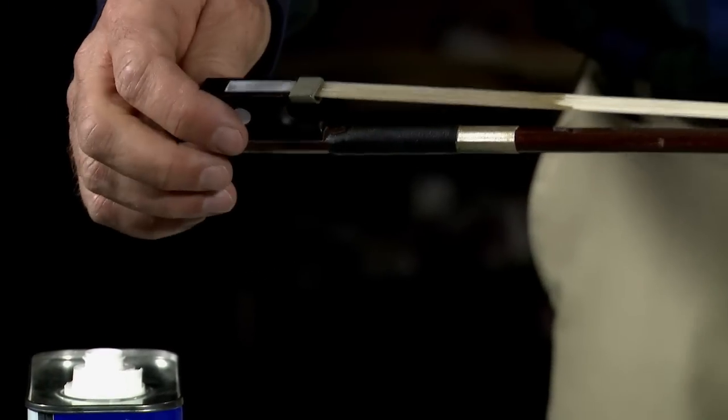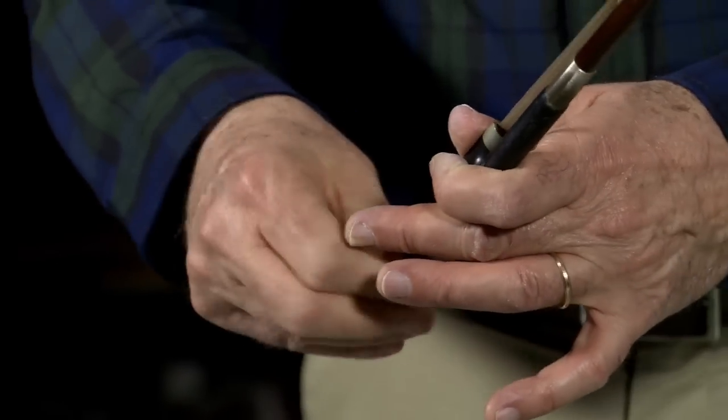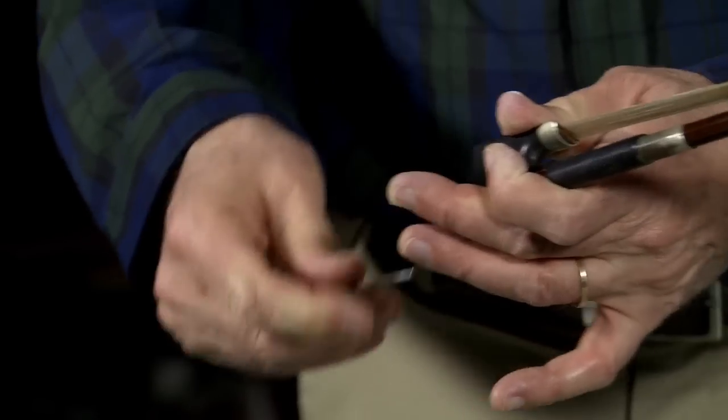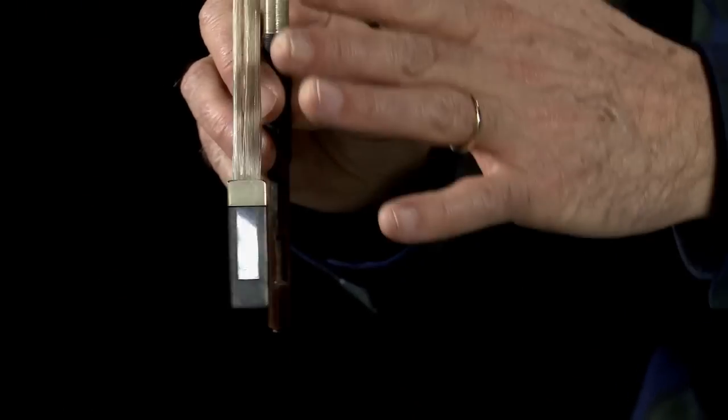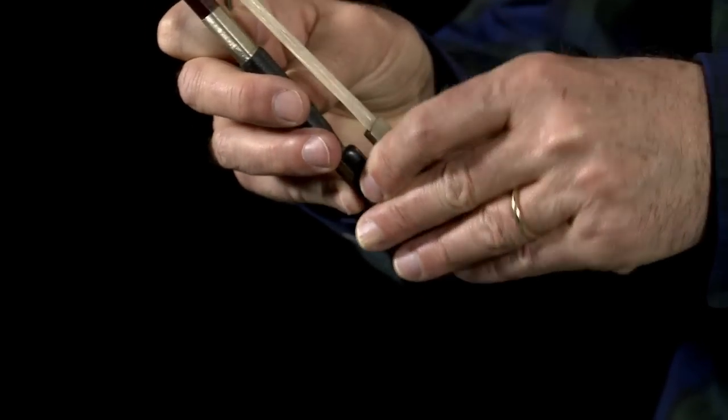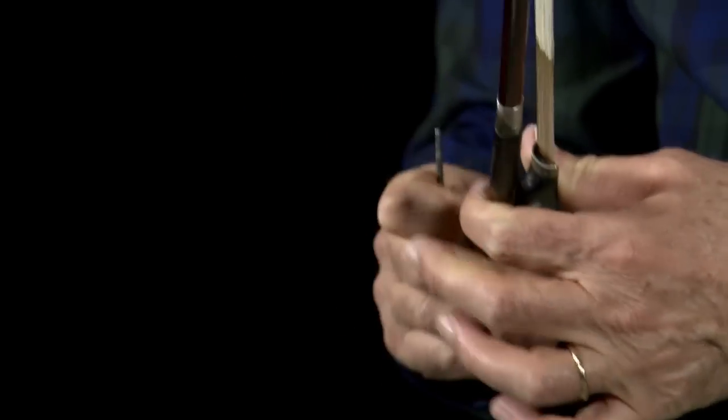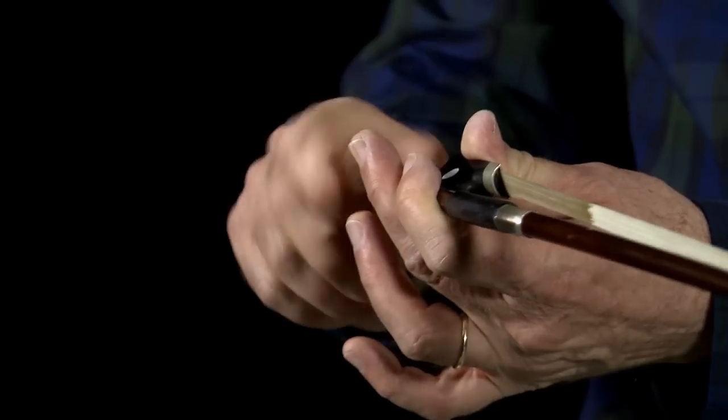Then, you let it dry, and if you want, after it's dried, you can take the screw off. Take the hair, and then you can comb it out to separate the hairs again. And it will be very clean and ready to go. Just add plenty of fresh rosin down there.